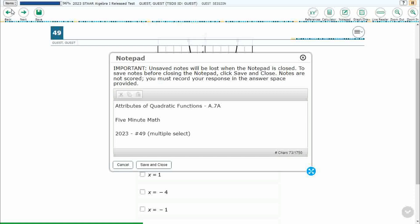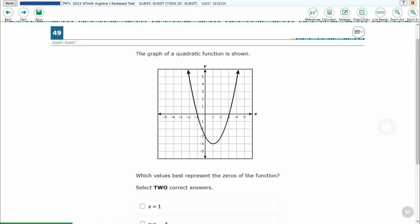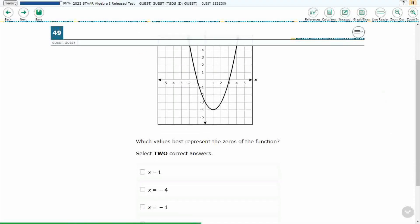This is standard A.7a in the great state of Texas. We are using item number 49, which is a new item type called Multiple Select, off the 2023 released STAAR test.